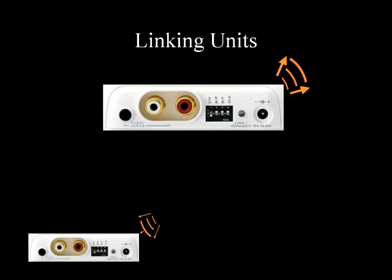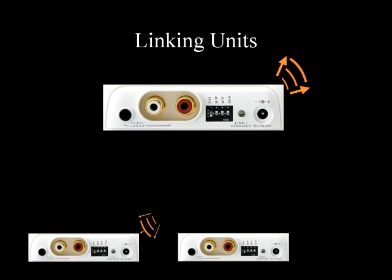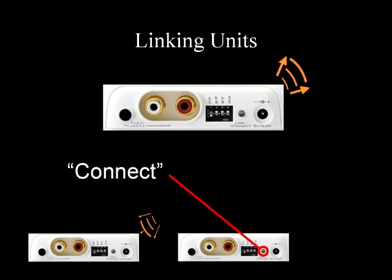Switch on the next receiver, press the connect button on the back, and then while the new receiver's link LED is flashing, press the connect button on the back of the transmitter again. Repeat these steps as many times as necessary to add all your receivers to the network.